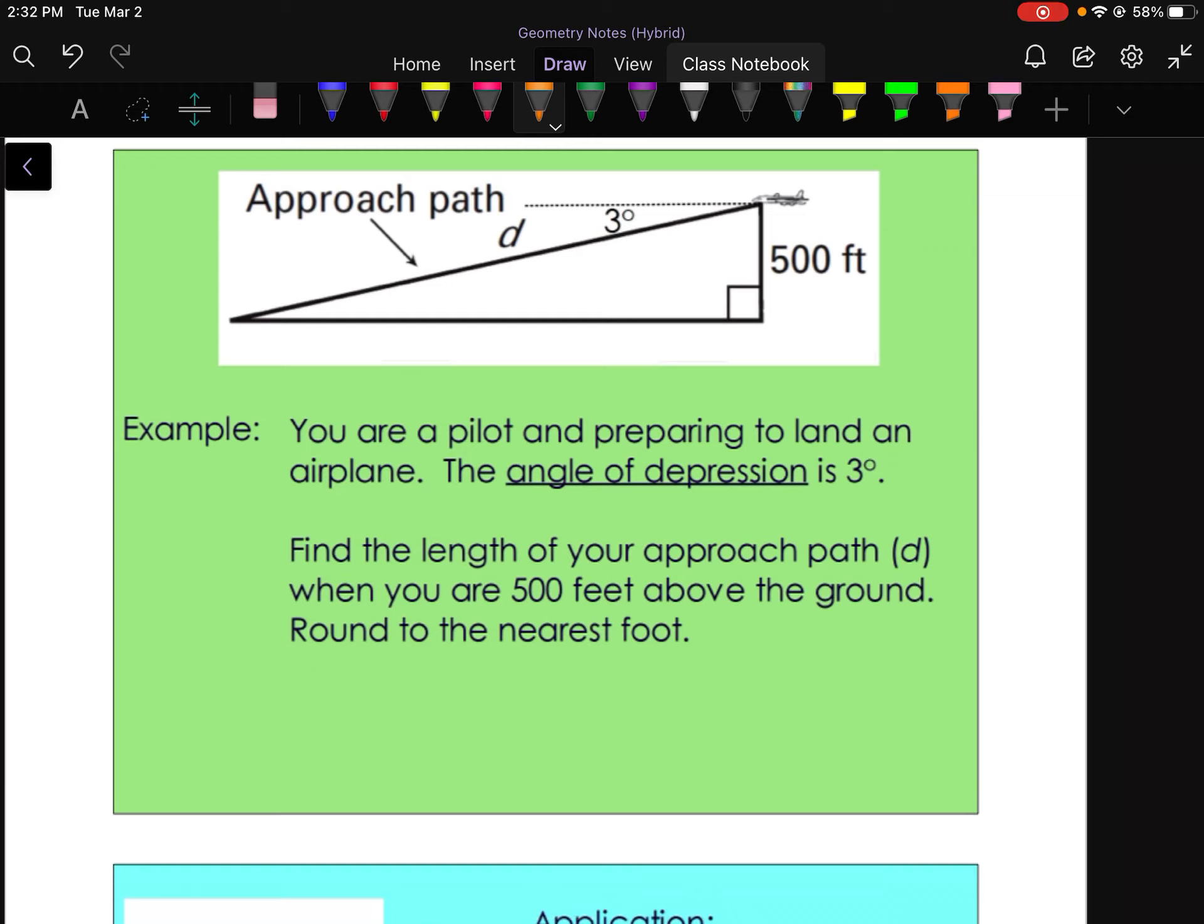You are a pilot, that's a scary thought, and preparing to land an airplane. Yikes. The angle of depression is 3 degrees. You can see here from our picture, we kind of have this imaginary line out here. The angle of depression here is 3 degrees. Find the length of your approach path D, which is the hypotenuse, when you are 500 feet above the ground.